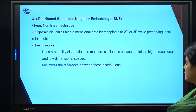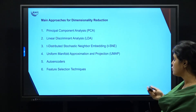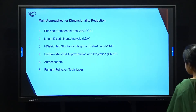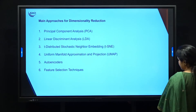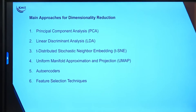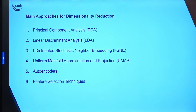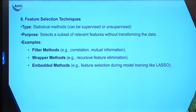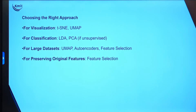In summary, the six basic techniques for dimensionality reduction are: PCA (Principal Component Analysis), LDA (Linear Discriminant Analysis), TSNE (T-distributed Stochastic Neighbour Embedding), UMAP (Uniform Manifold Approximation and Projection), autoencoders for deep learning, and feature selection techniques — which include wrapper methods, filter methods, and embedding methods.